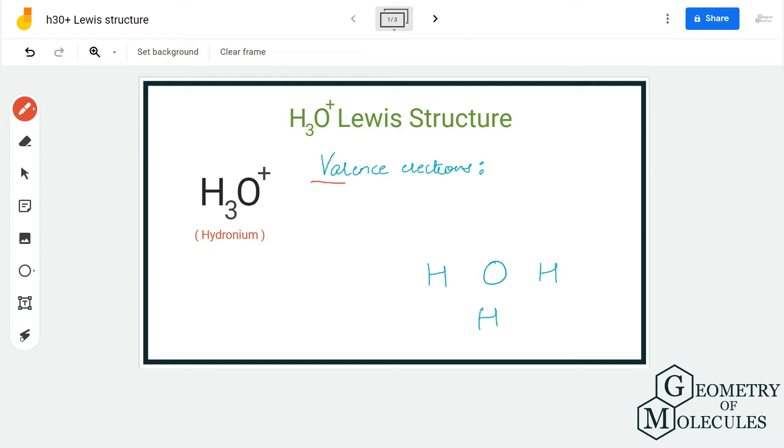To determine its Lewis structure, we are first going to look at the total number of valence electrons for this ion. Here we have three atoms of hydrogen, which means we have 1 times 3 equals 3, and we have one atom of oxygen, which means we have six valence electrons. We are going to minus this electron that the ion is losing.